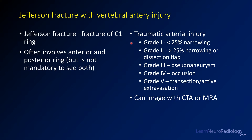On the Denver grading scale, grade one is less than 25% narrowing, grade two is more than 25% narrowing or a flap, grade three is a pseudoaneurysm, grade four is occlusion, and grade five is transection or active extravasation.